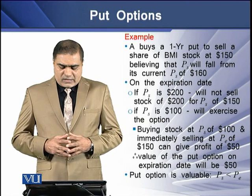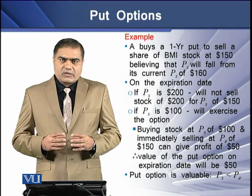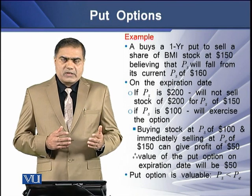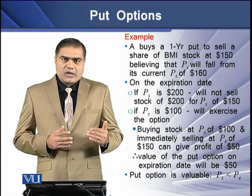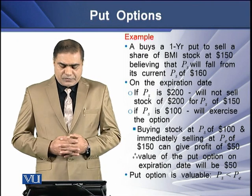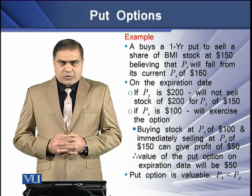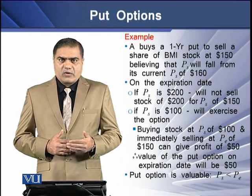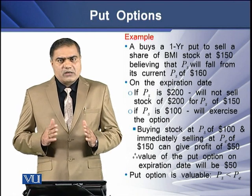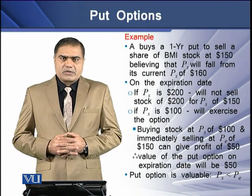So the value of a put option on the expiration date in this contract will be equal to $50, which is the difference between the exercise price of $150 and the stock price of $100. A put is valuable for the holder only if the stock price is less than the exercise price on the date of expiry of the put contract.